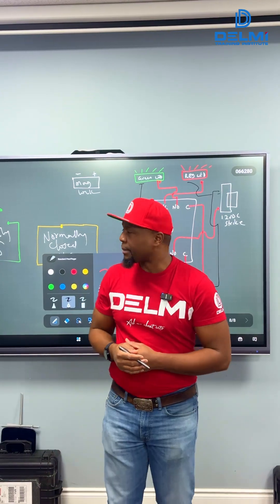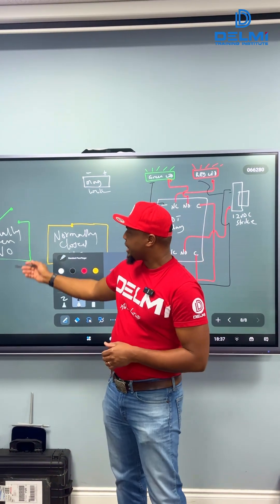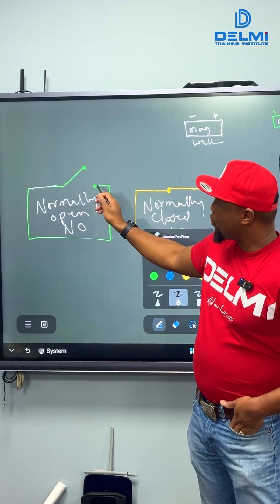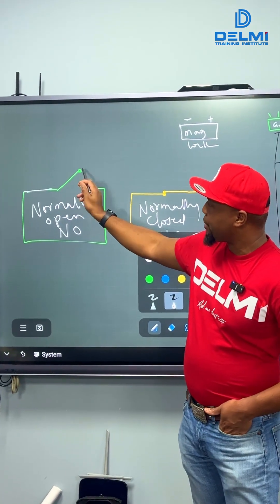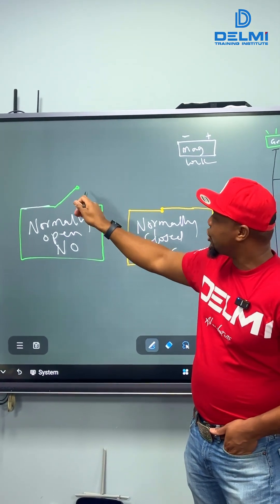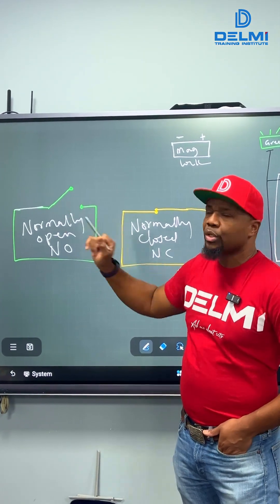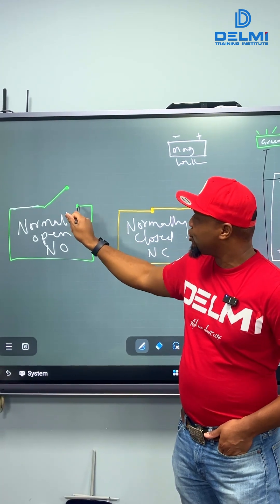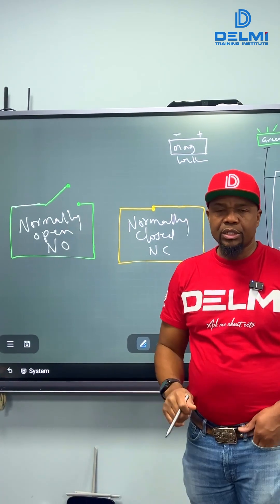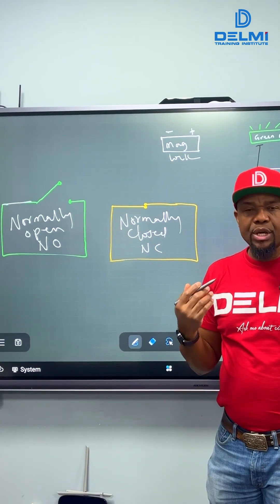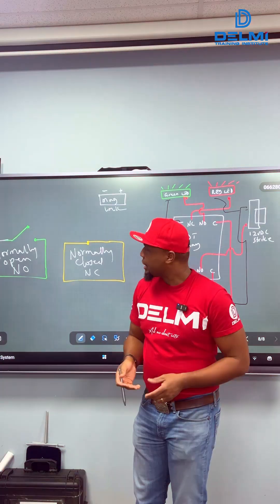A typical example is this. You can see that one of them — this is the pole, this is the throw — there is no connection whatsoever between these two terminals, so that circuit is going to be open forever.